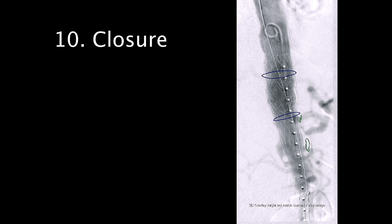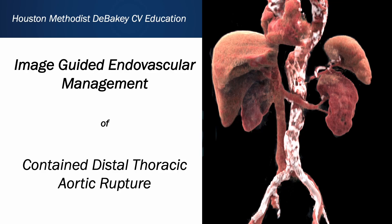After we removed all catheters and wires, the left groin was closed percutaneously, while the right groin was closed with a 4-O Monocryl. This concludes our video on the image-guided endovascular management of contained aortic rupture. Thank you for watching.